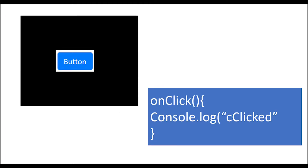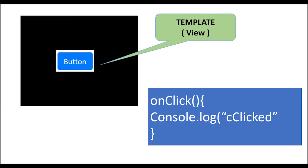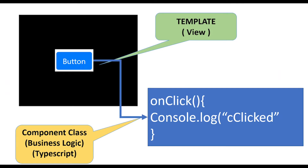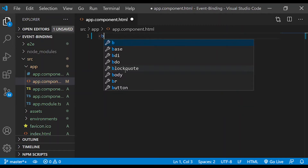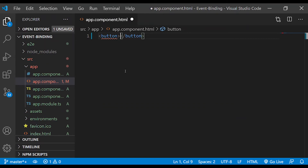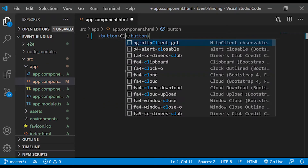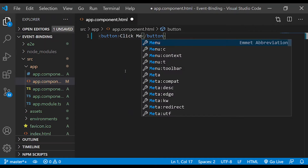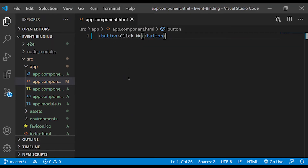For example, in a view you can create a button. When you click the button in the view, the Component Class executes a method. This is the basic flow. Simply create a button with the name 'Click Me' in the view.